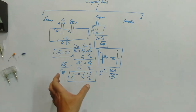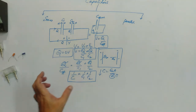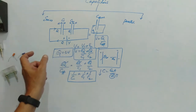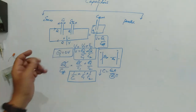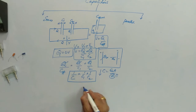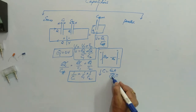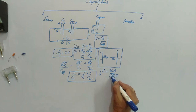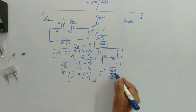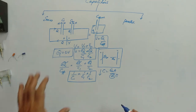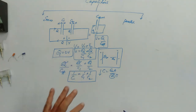For two identical capacitors each of capacitance C connected in series, the effective capacitance is C/2, because the effective distance becomes 2D. This covers all about the series connection.